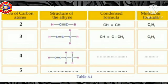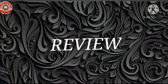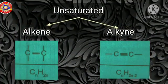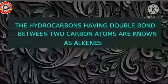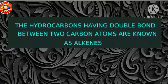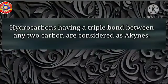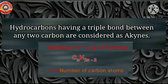It's time to wind up today's class. Today we discussed unsaturated hydrocarbons - alkenes and alkynes. Alkenes are hydrocarbons having a double bond between any two carbon atoms; their general formula is CnH2n, where the number of hydrogen atoms is double the number of carbon atoms. Alkynes are hydrocarbons having a triple bond; their general formula is CnH2n-2, where the number of hydrogen atoms is 2 less than twice the number of carbon atoms. See you in the next class, thank you for watching.